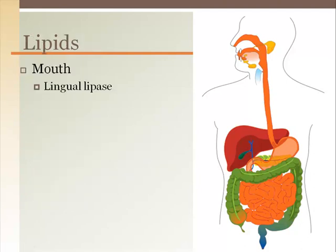Beginning in the mouth, lipids become exposed to lingual lipase, which starts the breakdown process. Lingual lipase works well in an acidic environment, so it continues to break down lipids while the food is churning in the stomach. The chief cells in the fundus of the stomach secrete gastric lipase, which also contributes to the digestion of fat.